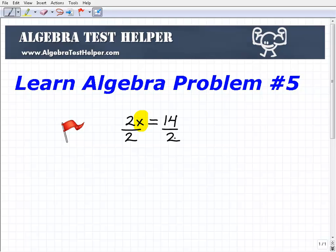And to do that, or the result of doing that, is going to be this. So I get 2x divided by 2, or 2 divided by 2 is 1. So this is going to be 1x is going to be equal to 14 divided by 2 is 7. So my solution is x equals 7.